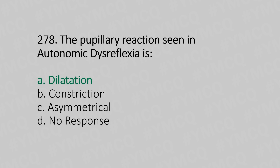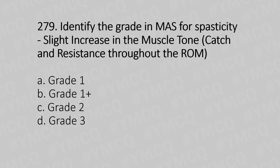Now let's move to question number 279. Identify the grade in the Modified Ashworth Scale of spasticity: slight increase in muscle tone with catch and resistance throughout the range of motion. Option A, grade 1; Option B, grade 1 plus; Option C, grade 2; Option D, grade 3. And the answer is Option B, grade 1 plus.